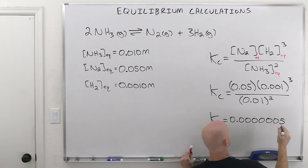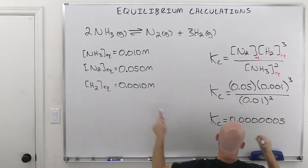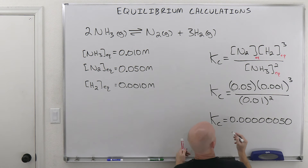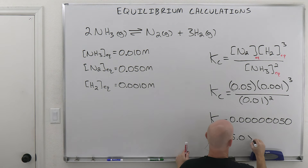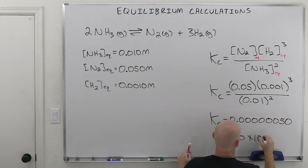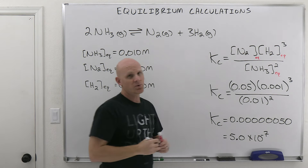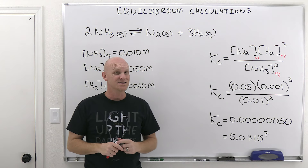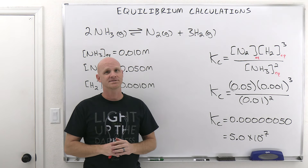We can write this as 5.0 times 10 to the negative 7, which is our correct answer. This is the easier of the situations. Let's take a look at some ICE table calculations.